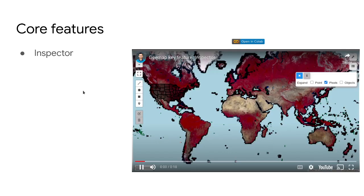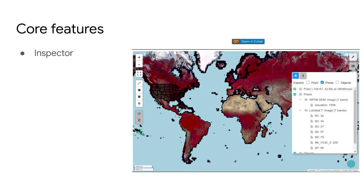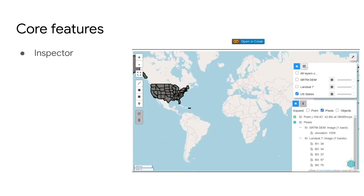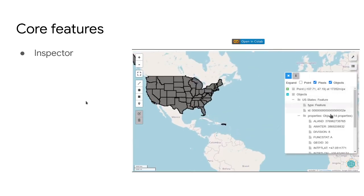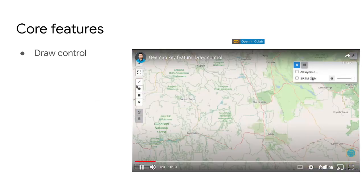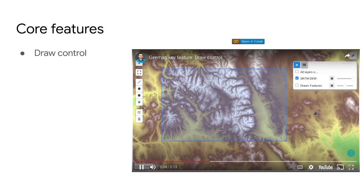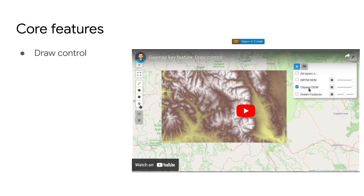You can also do pixel inspection — if you're doing remote sensing or geospatial work, you might want to inspect pixel values. geemap has tools that allow you to do that easily for raster data. You can also use drawing tools, for example the join tools, to simply clip the data if you want to focus on a small area. Again, everything happens in the cloud and anyone can try it out easily.